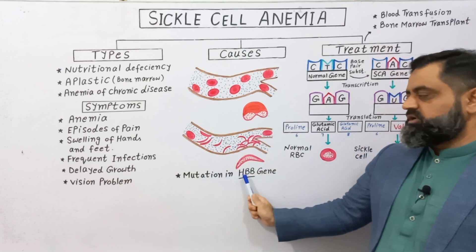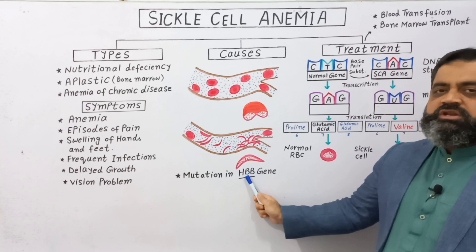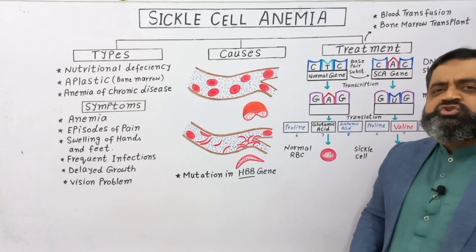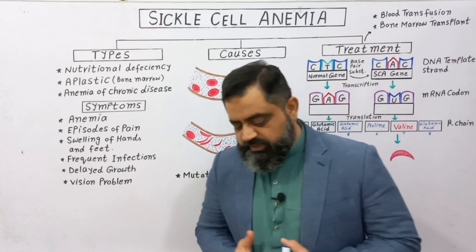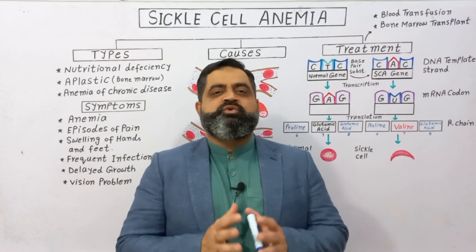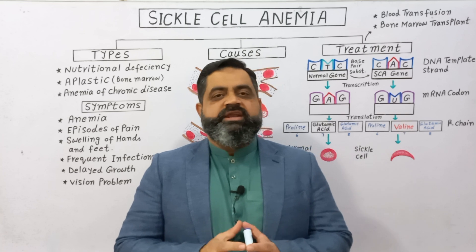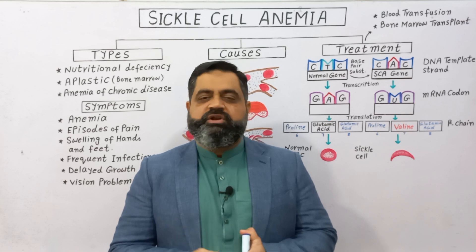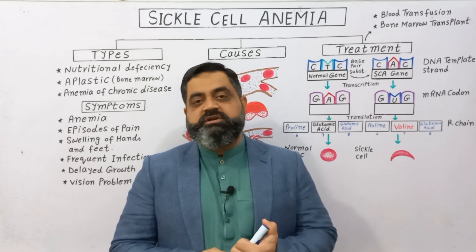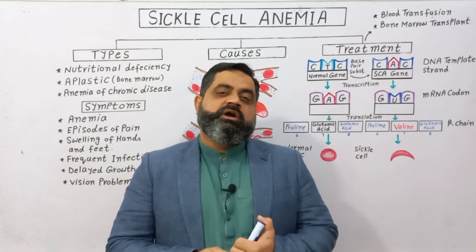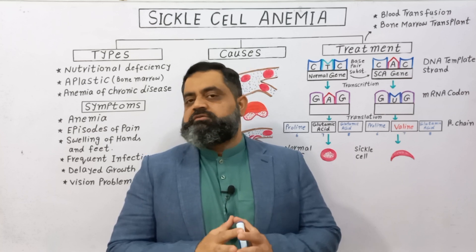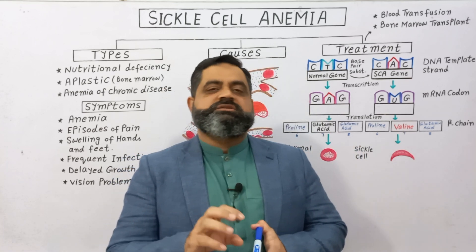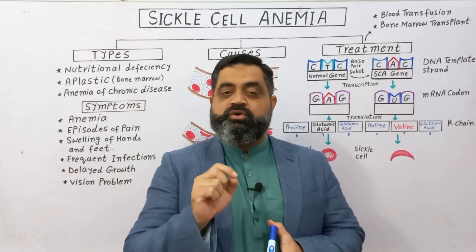The major cause of sickle cell RBCs is mutation in the hemoglobin beta chain genes. This can happen when a person is exposed to mutagens such as X-rays, ultraviolet rays, certain toxins, chemicals, and drugs, which can cause mutations in our body. These mutations usually occur at the cellular level — in the nucleus, in the chromosomes.